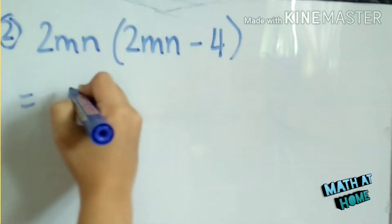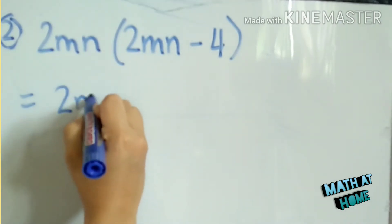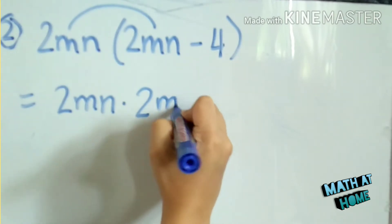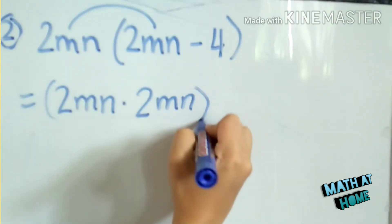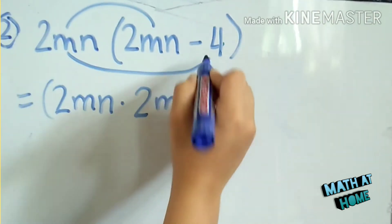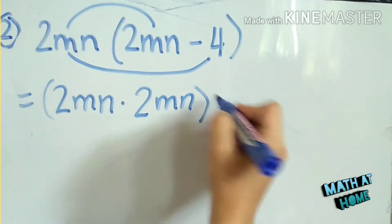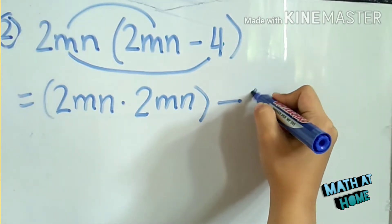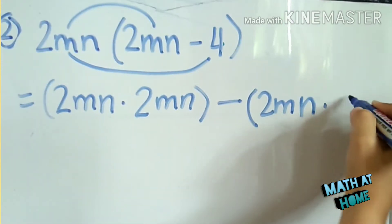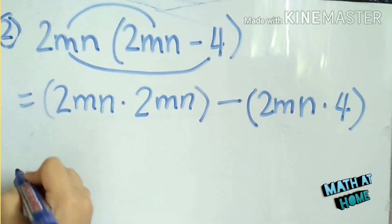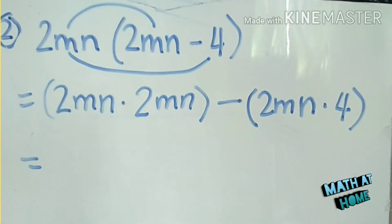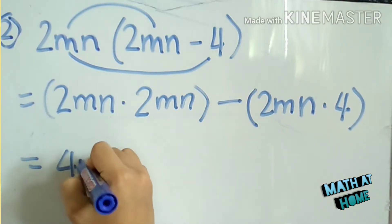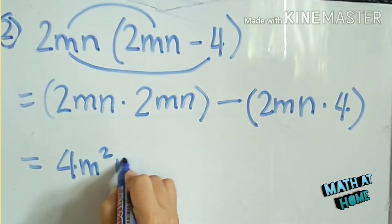We will distribute 2mn. First, 2mn times 2mn. Then we distribute to negative 4 — positive times negative is negative. So 2mn times 2mn equals positive 4m squared n squared.